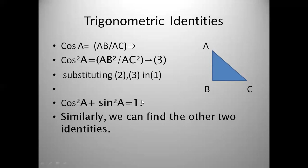So when you solve the sums in exercise 11.4, wherever you get sin²A plus cos²A, in place of that you can write directly 1. This is one of the identities.